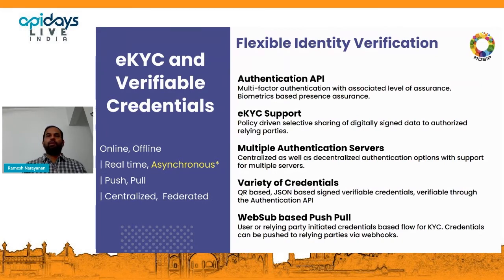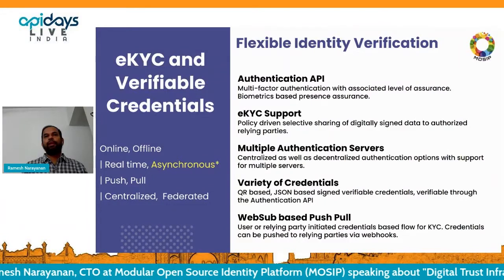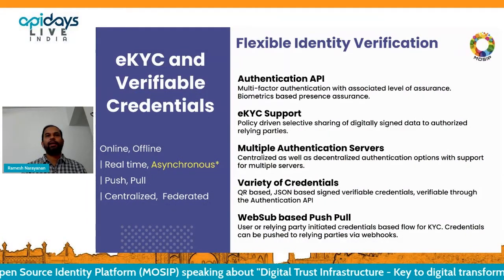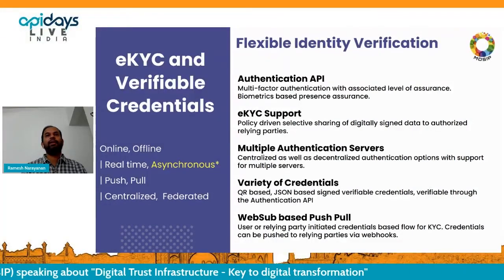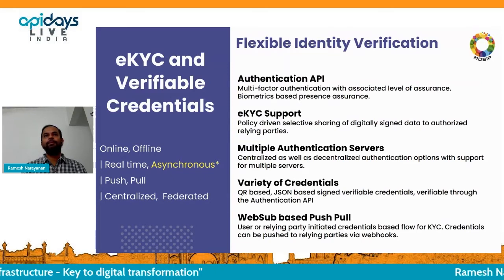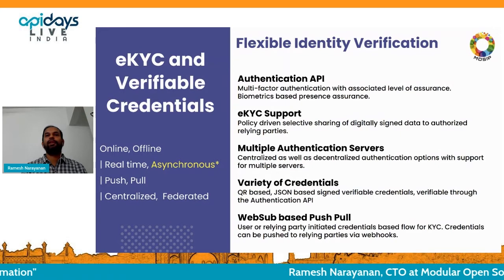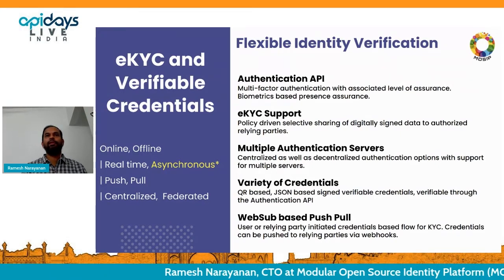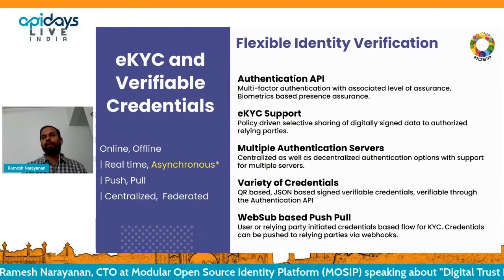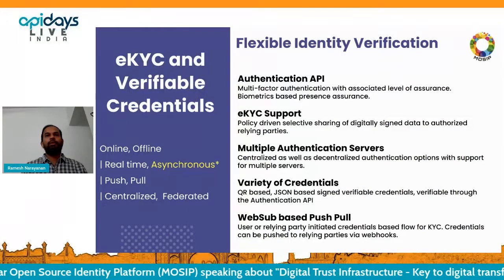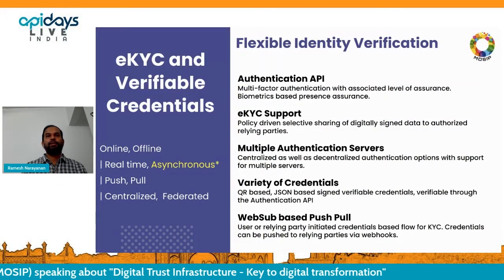Instead of submission of information, people can rely on the information already in our database. That is where we offer KYC APIs. We have electronic KYC support where if the user provides consent and authorizes the transaction, we share the information back as a record based on who is the relying party. This record is signed by the national ID system so that it can be trusted data, and contains the attributes required — for example, name, date of birth, address, and photograph for opening a bank account.